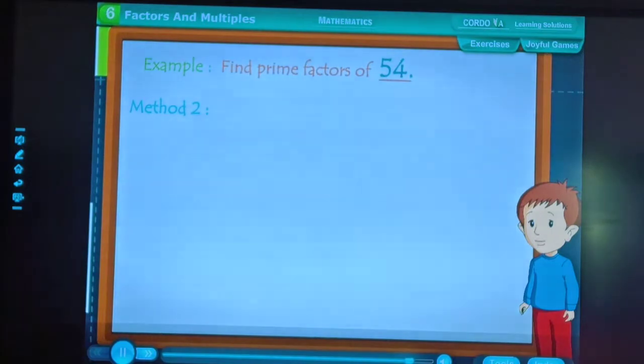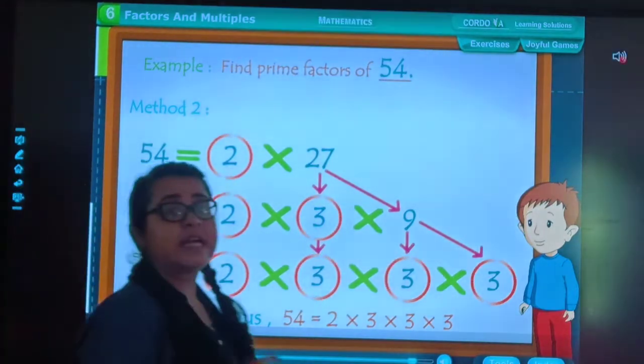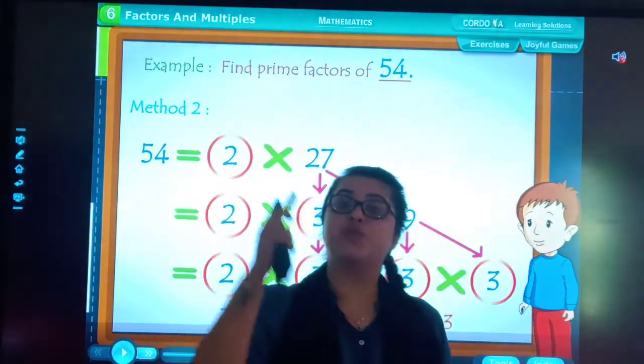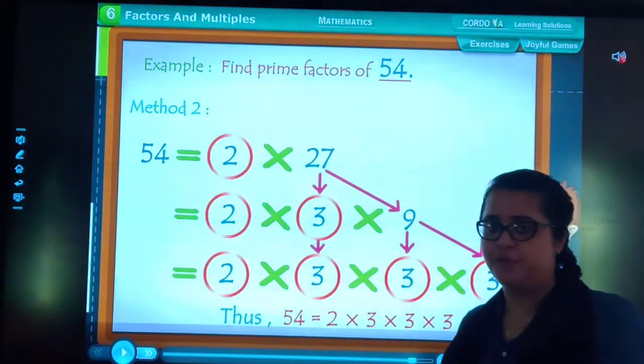Method 2: 54 is equal to 2 into 3 into 3 into 3. Same method, but the factor tree can be shaped in statement form. In this we will not give a shape, we will write in a statement form.